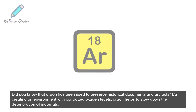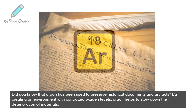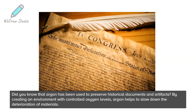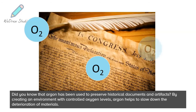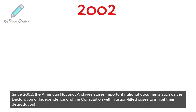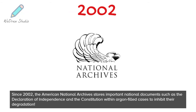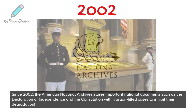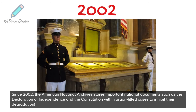Argon has also been used to preserve historical documents and artifacts by creating an environment with controlled oxygen levels, helping to slow down the deterioration of materials. Since 2002, the American National Archives stores important national documents such as the Declaration of Independence and the Constitution within argon-filled cases to inhibit their degradation.